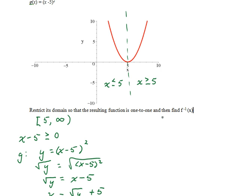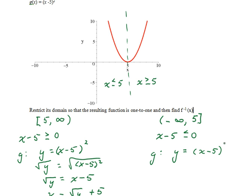On the other hand, if we chose the domain from negative infinity to 5 including the 5, then x minus 5 would be less than or equal to 0. When we go to solve for x, we start with y equals x minus 5 squared, but when we take the square root of both sides, we want the negative value on the square root of y — it would be plus or minus the square root of y, but this time it's minus the square root of y because x minus 5 is going to be a negative value.